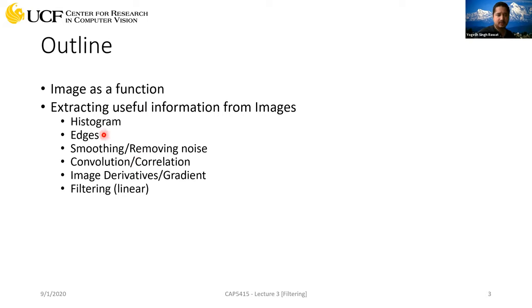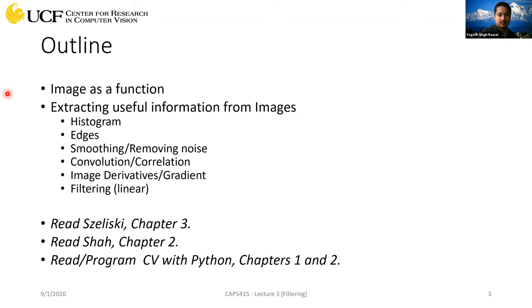First we'll look into histogram. Then we'll see how we can detect edges — the next lecture will cover this in more detail. We'll see how we can do smoothing operations, how we can remove noise from images. We'll talk about filters such as convolution and correlation. We will also look into image derivatives and gradients, and finally we'll see how all of this applies for filtering. If you want to refer to a textbook, I recommend chapter three of the first book, chapter two of the second one. For hands-on experience, chapter one and two from the computer vision with Python book.